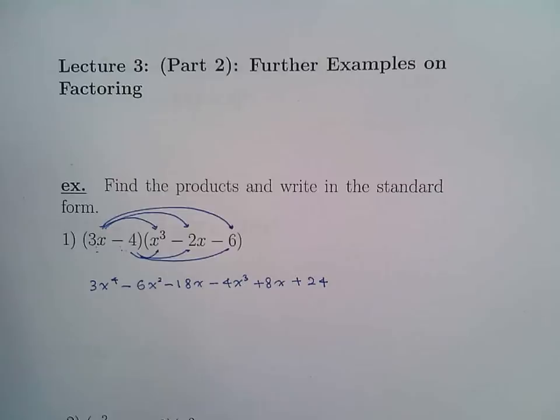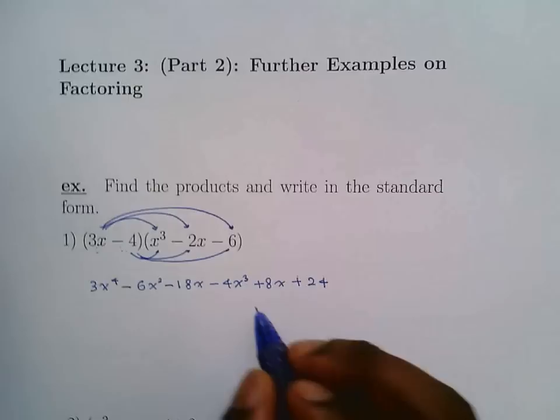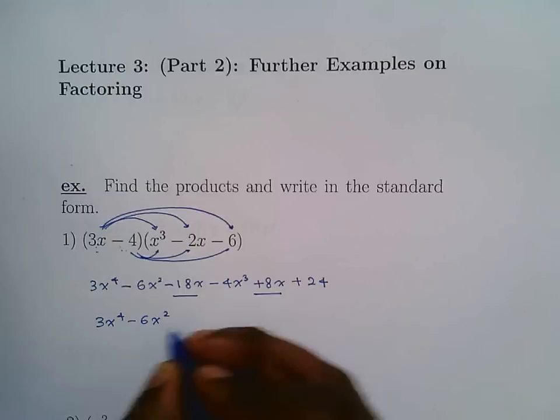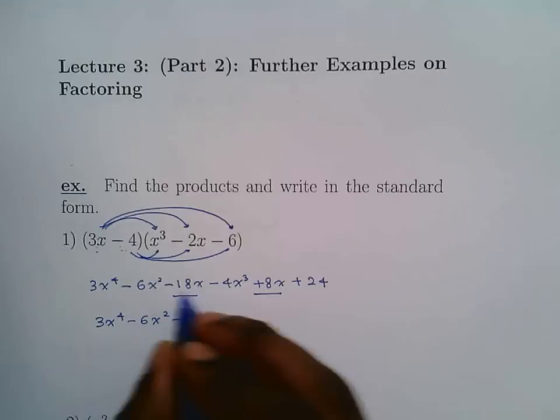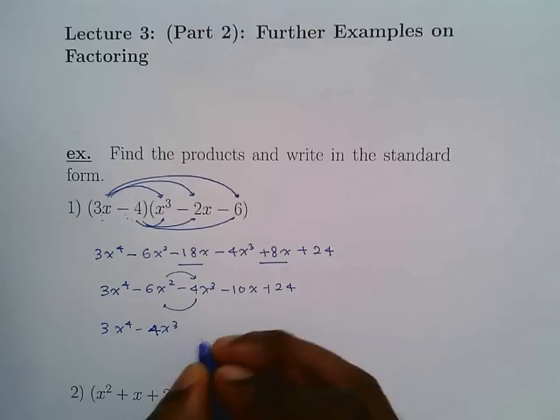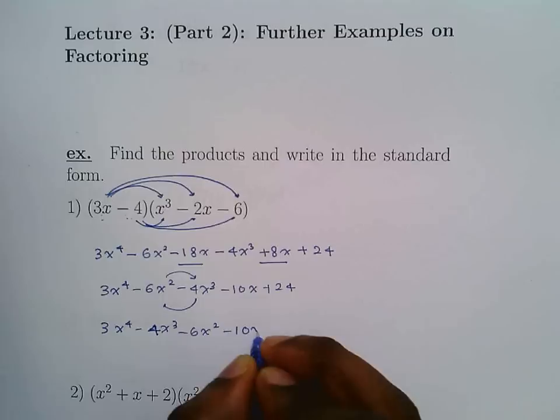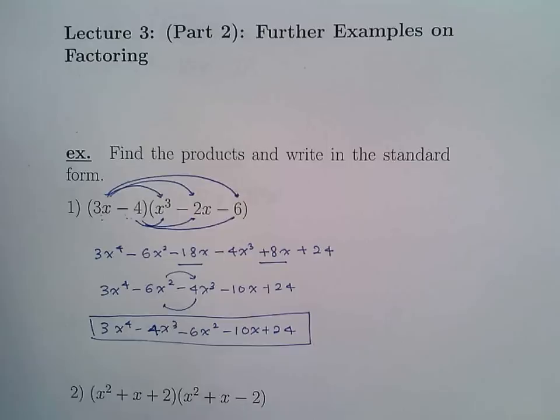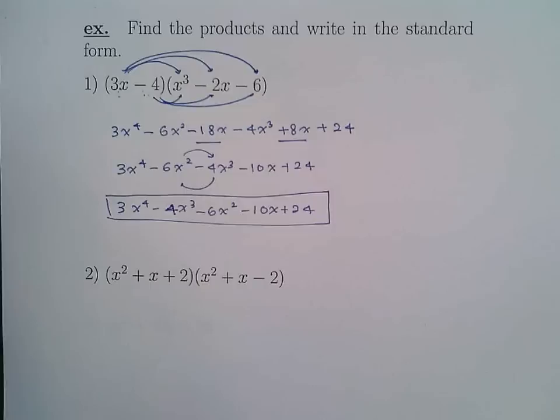Now write it in standard form and combine like terms. The only like terms are -18x and +8x, giving -10x. So the result is 3x⁴ - 4x³ - 6x² - 10x + 24. That's it — very much like FOIL but extended.